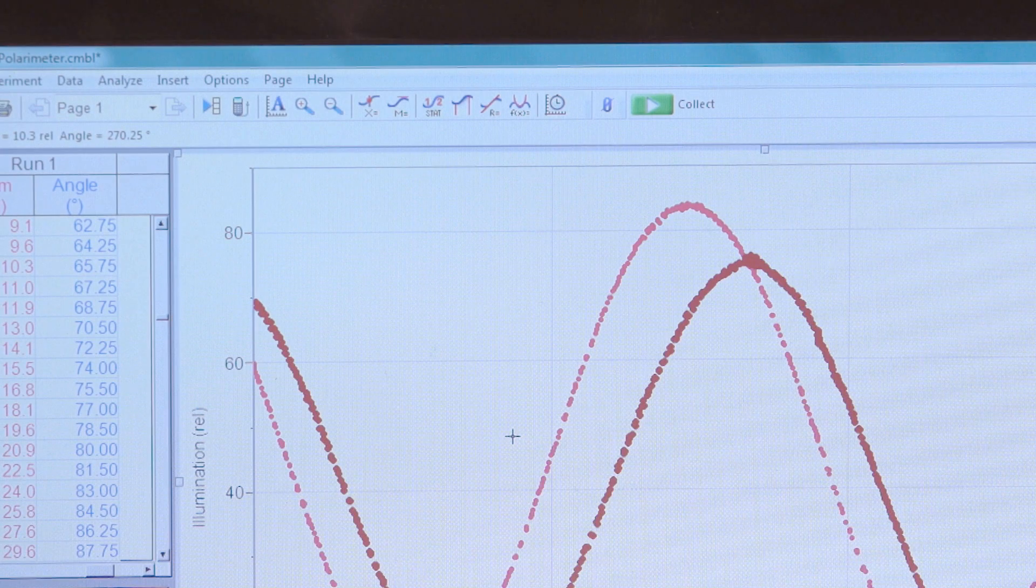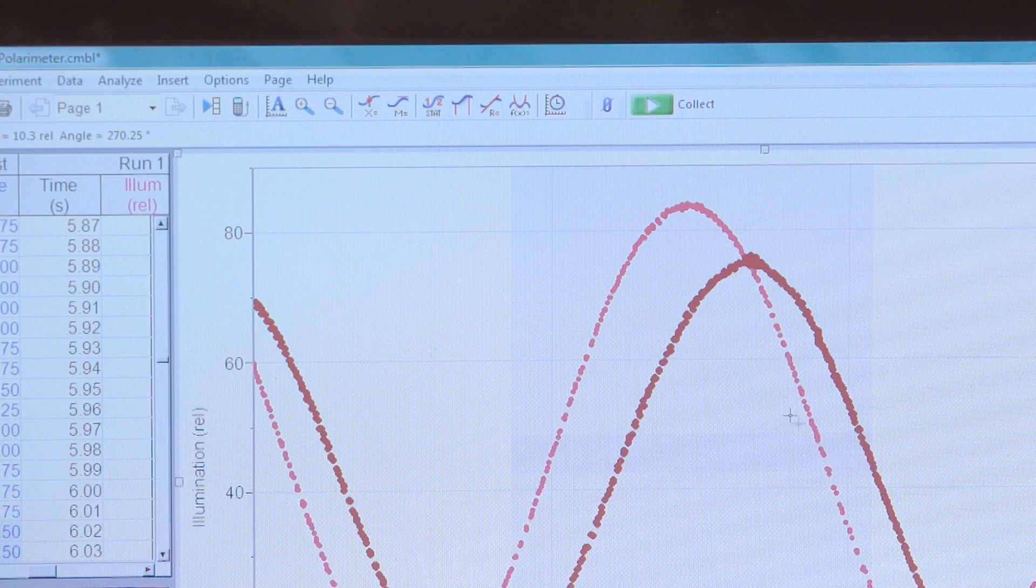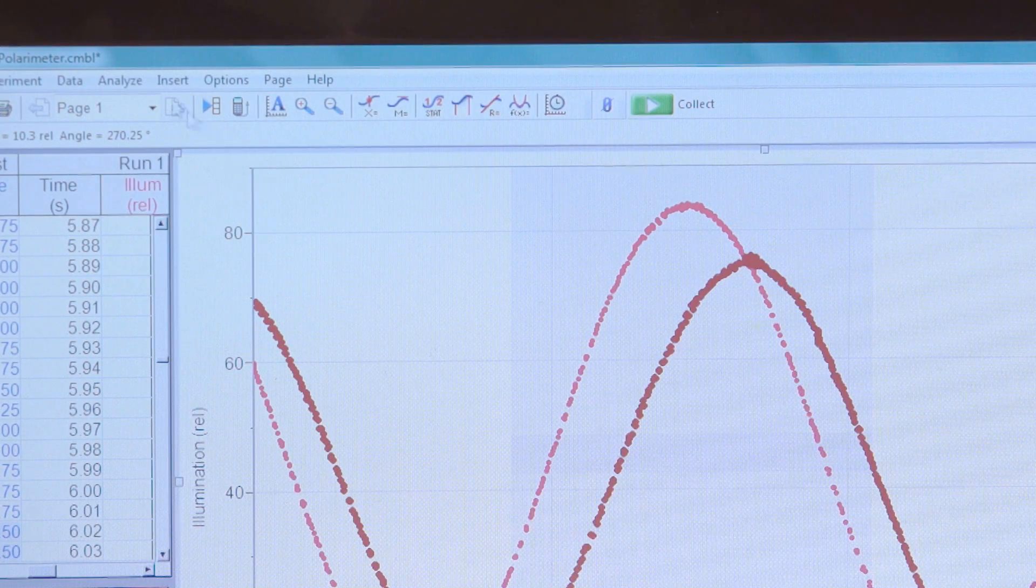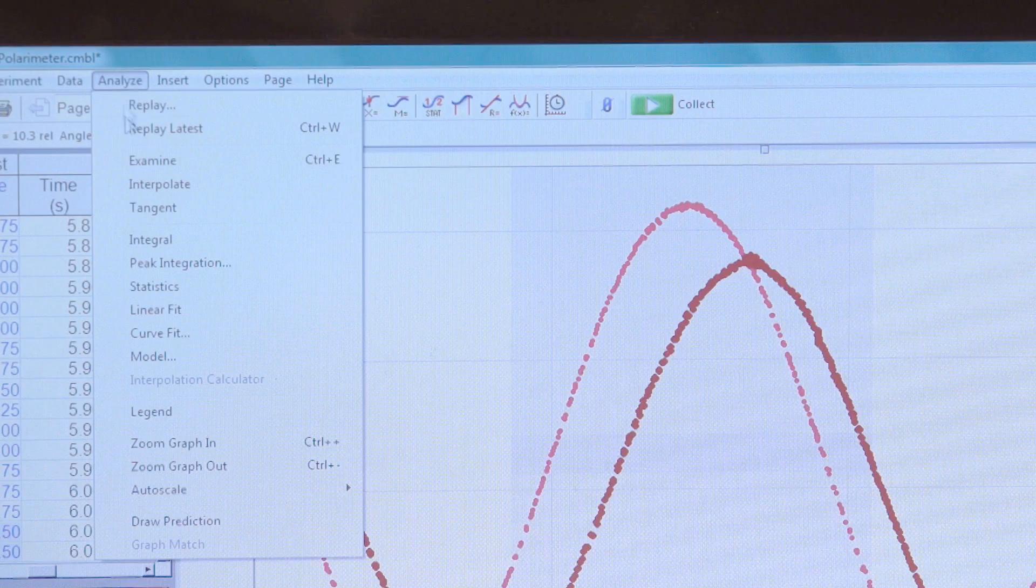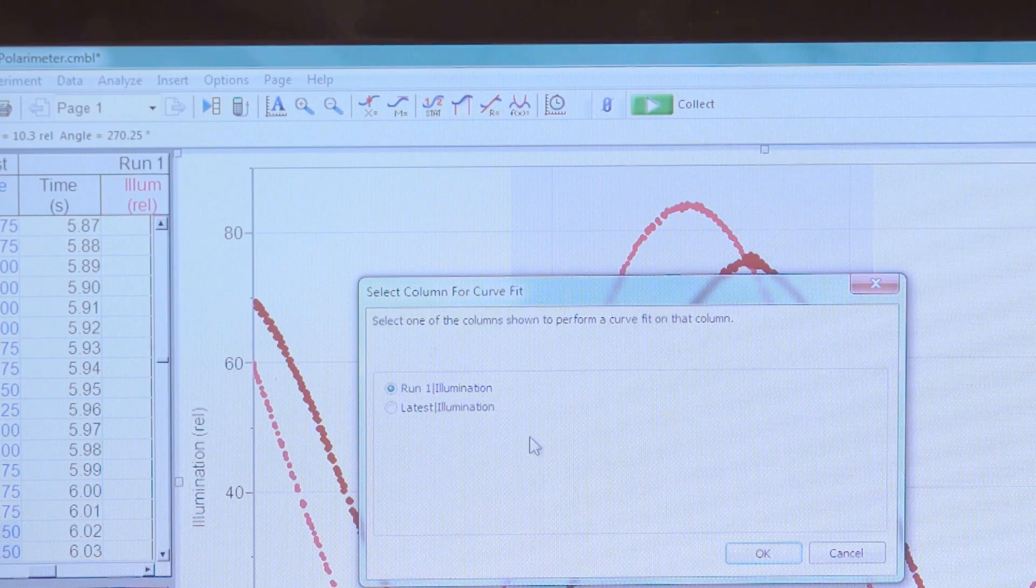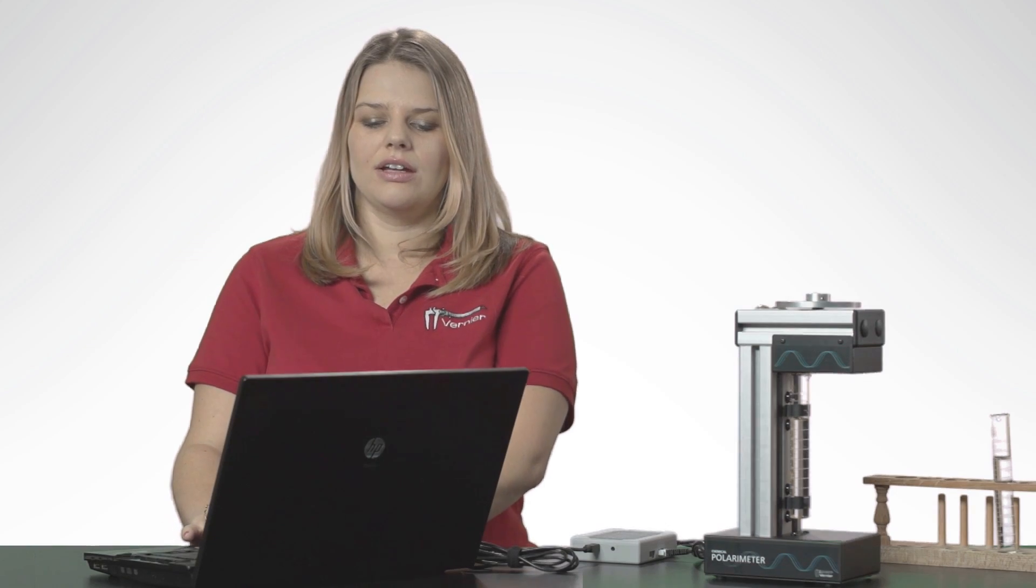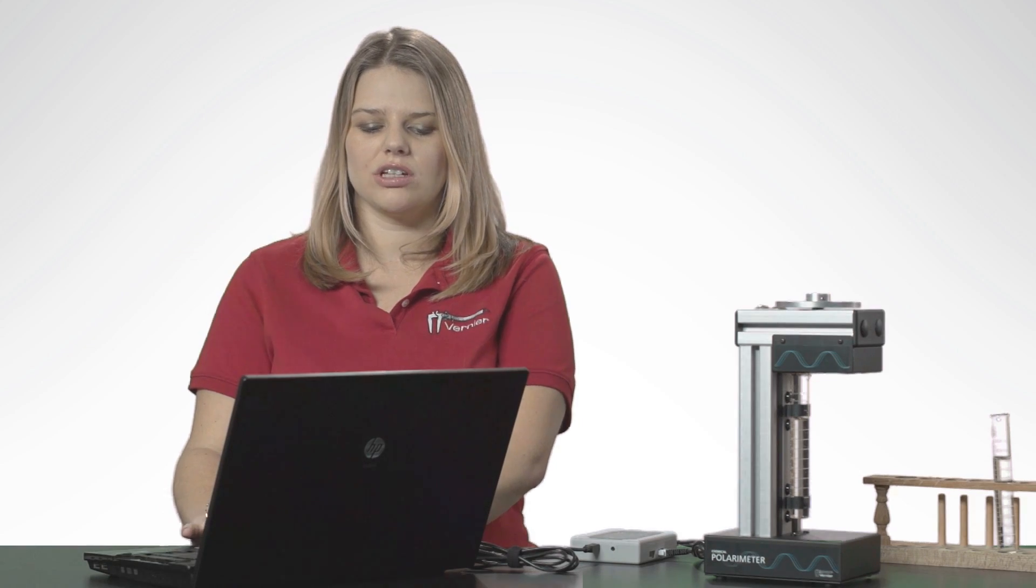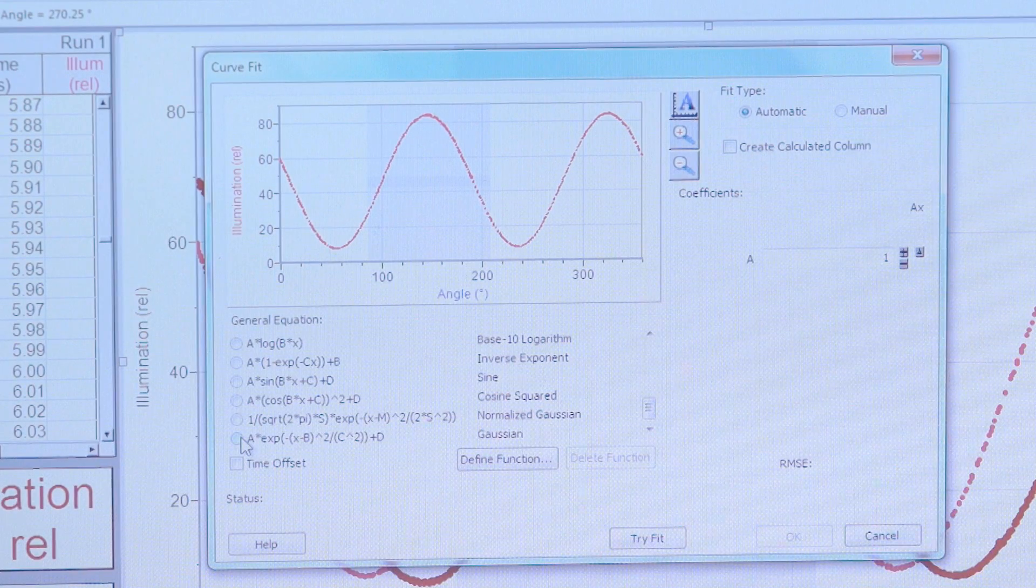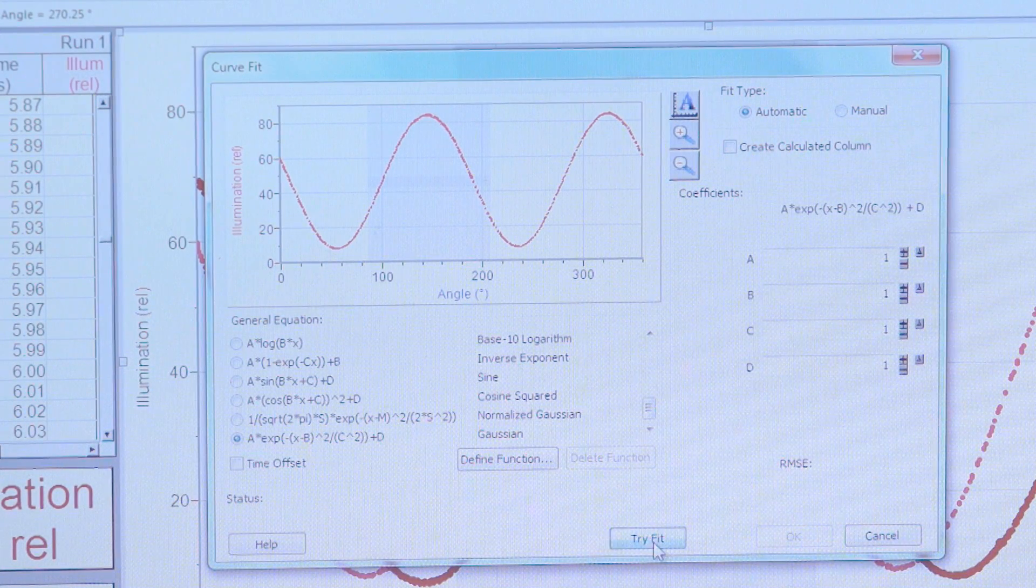First, to do the Gaussian fit, we select a region of one of the curves that's Gaussian-like. Then, from the Analyze menu, we're going to select Curve Fit. Select the blank first, and now scroll down to the bottom of the list of equations and select the Gaussian equation. Then tap on Try Fit.